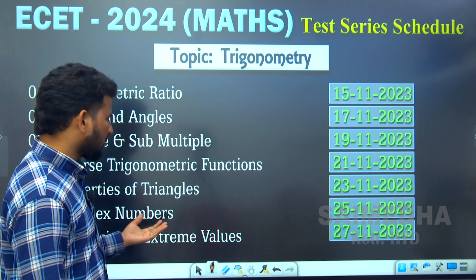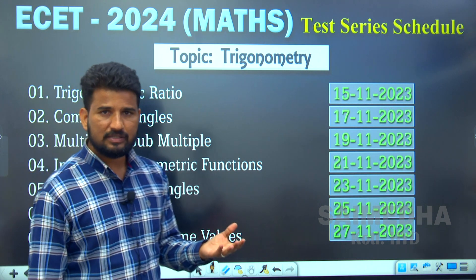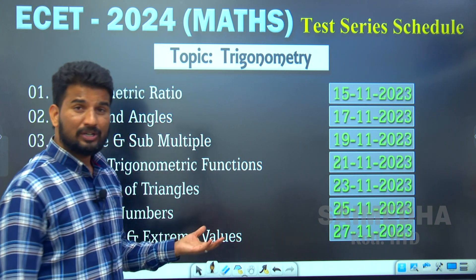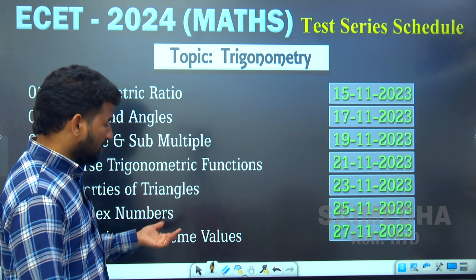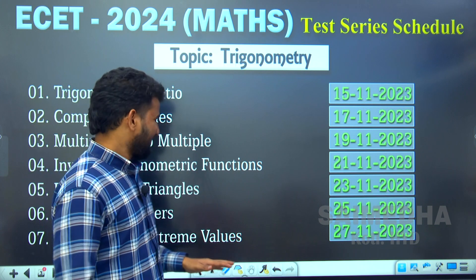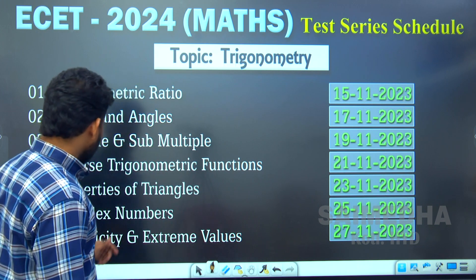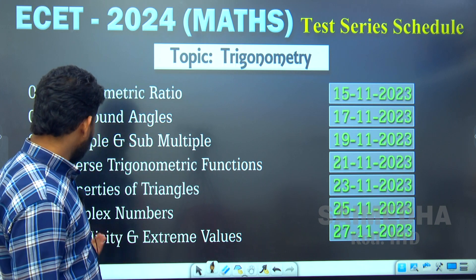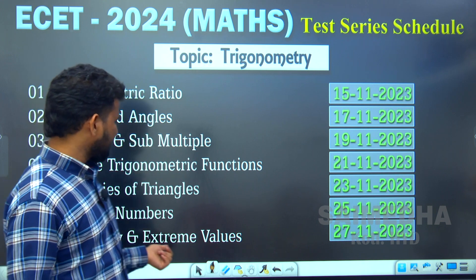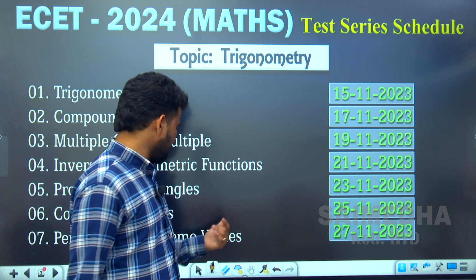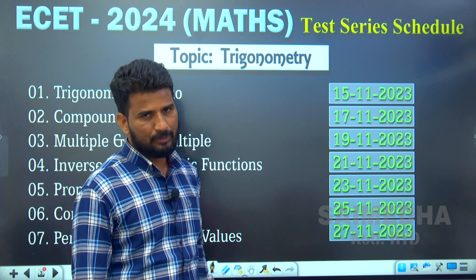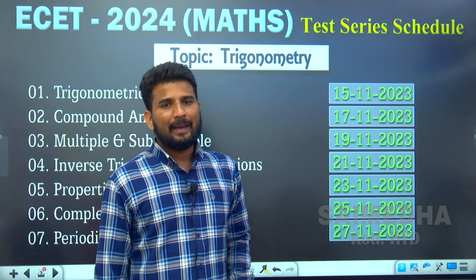25th of November will be complex numbers — complex numbers are very very important. Remember, not only complex numbers, everything is important, but you can easily get marks in this case. Periodicity and extreme values will be conducted on 27th of November.